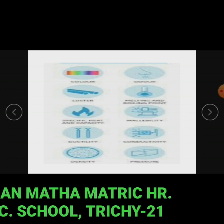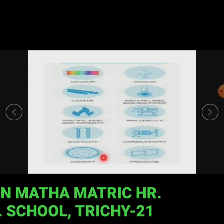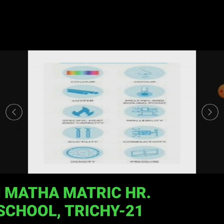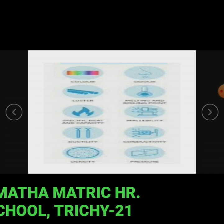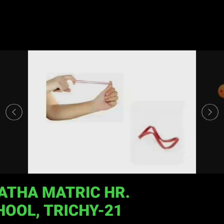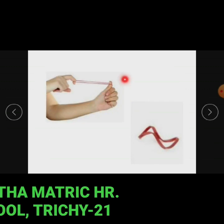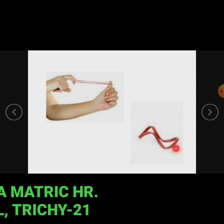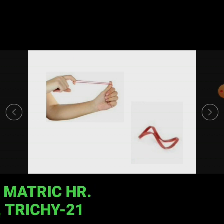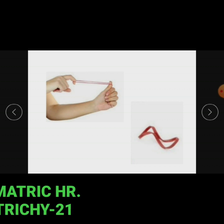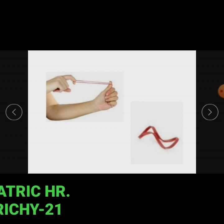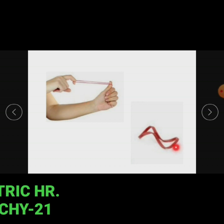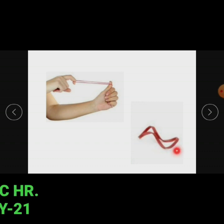Any change in these physical properties is referred to as a physical change. For example, when a rubber band is stretched, it elongates. When the stretching is stopped, the rubber band comes back to its original state and shape. In this example, there is no new substance formed but the rubber band remains the same before and after the elongation.